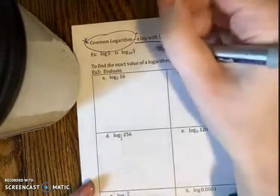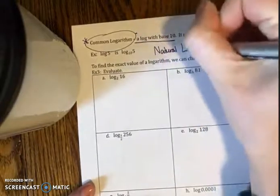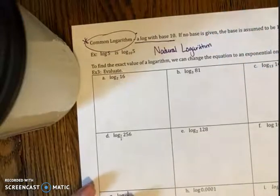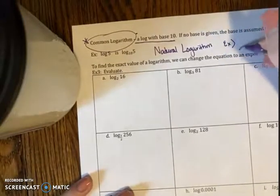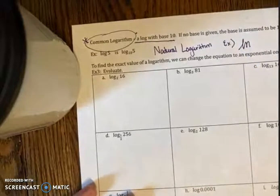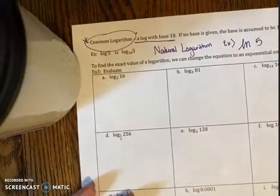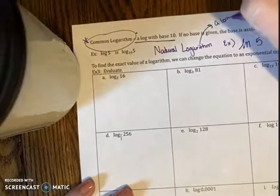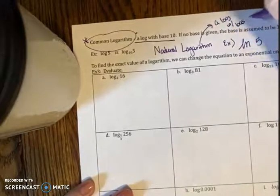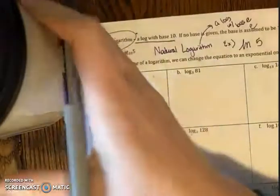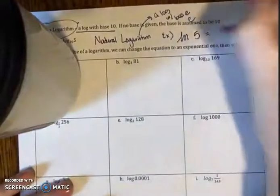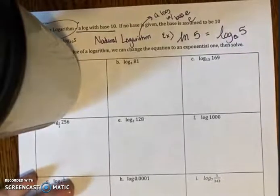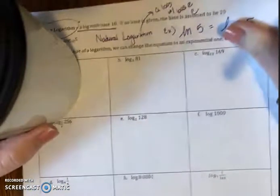I also want you to write in there's something called the natural logarithm. You're going to see this in a later video. The natural logarithm is denoted as ln. So the natural logarithm is ln of let's say 5. The natural logarithm is a log with base e. So the natural log of 5 is actually equivalent to log base e of 5. Again, we'll see that in another video later on in this unit.